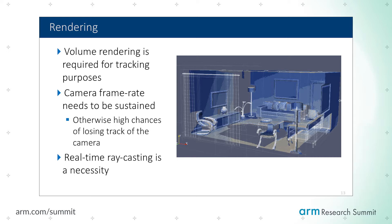The next step in the pipeline is to render a view that will be used to align with the next frame. This is done by ray casting. Ray casting is already expensive in a regular grid, but it can be dramatically more expensive in a tree because of the latency involved in accessing the data. So it's absolutely fundamental to do that sampling as efficiently as possible.